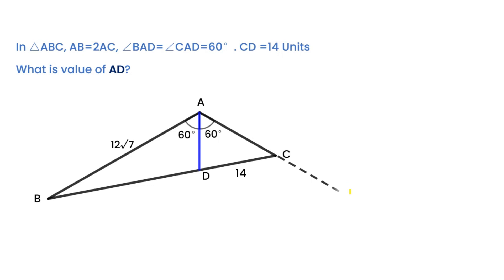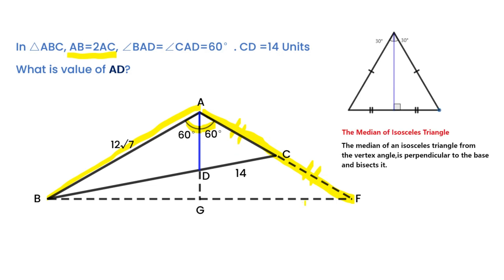Extend AC to point F. Make CF equal to AC. So we can get AF equal to AB. Connect BF. Obviously, triangle ABF is an isosceles triangle. Extend AD, intersect BF at point G.